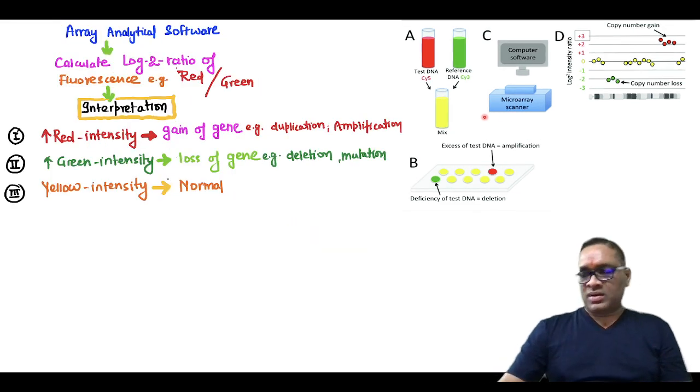So how we will proceed on array analytical software? This is the array analytical software, this computer, and they will calculate the log 2 ratio of the fluorescence of what color: red color and green color. So remember, you can see there is a log 2 ratio of the intensity of the red color and green color is measured on this in the graph.